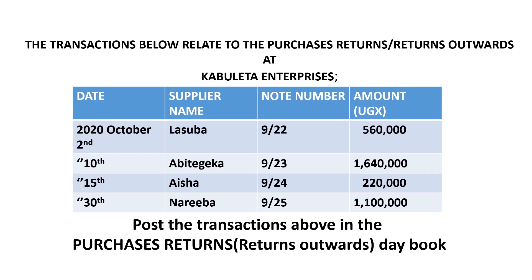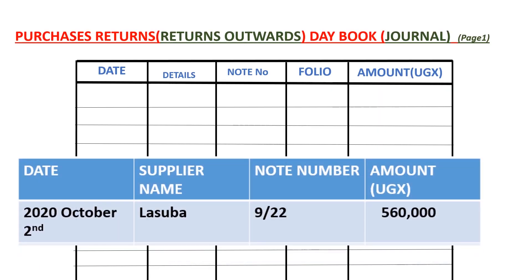We are required to post transactions in the purchases returns day book. Note that 'day book' and 'journal' mean the same thing, as do 'returns outwards' and 'purchases returns' — I'll use them interchangeably. The first transaction: on 2nd October 2020, supplier Lasuba — we returned goods worth 560,000 to him, note number 9/22. We write the date, the supplier name Lasuba, note number 9/22, and the amount 560,000.